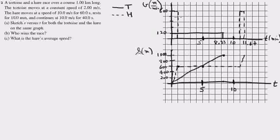Over on the right side of the screen here, on the top I have a V versus T plot. On the bottom I have an S versus T plot. I'm using a solid line for the tortoise and a dotted line for the hare.